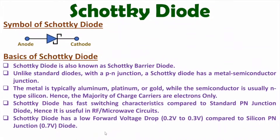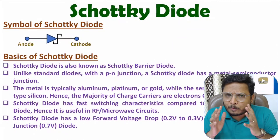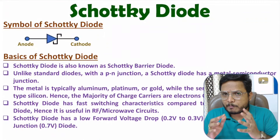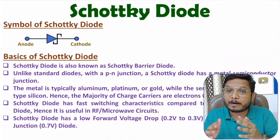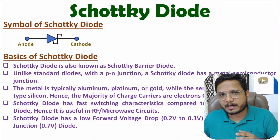The Schottky diode has a low forward voltage drop, typically around 0.2 V to 0.3 V, which is quite low compared to the silicon PN junction diode whose forward voltage drop is around 0.7 V. Because of this lower forward voltage drop, the Schottky diode has lower power loss compared to a conventional PN junction diode.